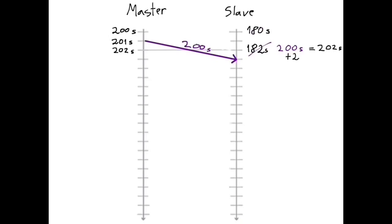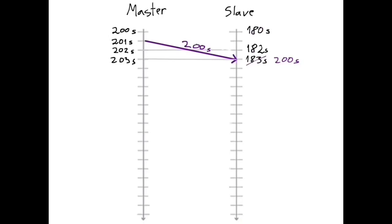The slave would then not adjust its clock value to 200 at this point in time, but instead 1 second later. That is, it would update its value from 183 to the value of 200, when the clock of the master would already be reading the value 203. So the offset of the clock of the master and the slave would not only be the propagation time, but also the time it takes the master to read the current value of the clock and transmit that value. Having seen that PTP will have to compensate for the propagation delay and any random delays between reading the timestamp at the master and communicating that timestamp to the slave, let's now see how PTP actually works.